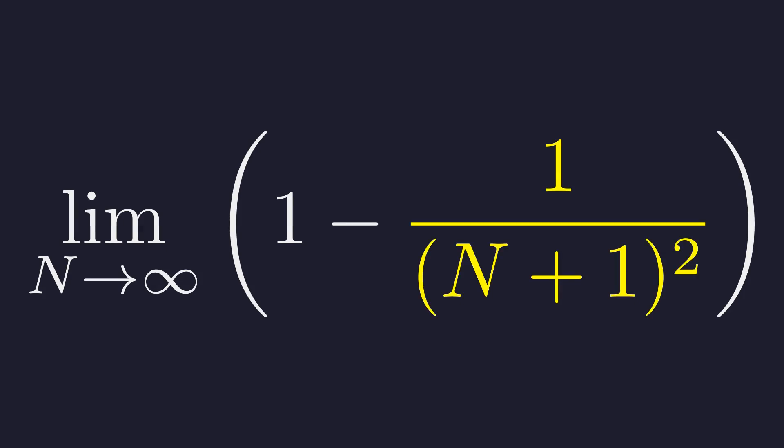As n becomes infinitely large, the denominator (n+1)² also becomes infinitely large. Therefore, this fraction approaches 0 — it just vanishes. The limit evaluates to 1 − 0, and so the value of the entire infinite sum is simply 1.